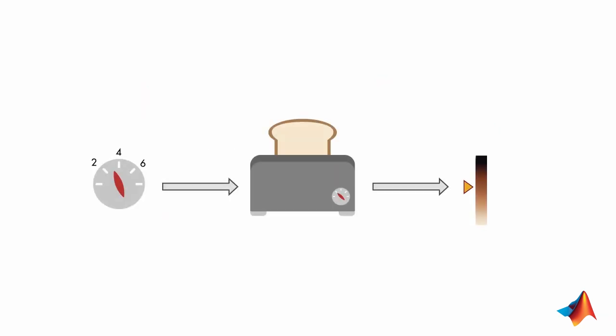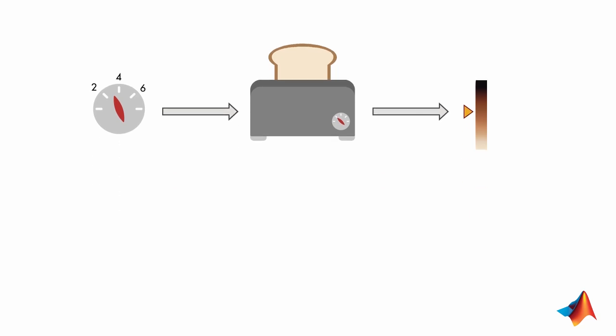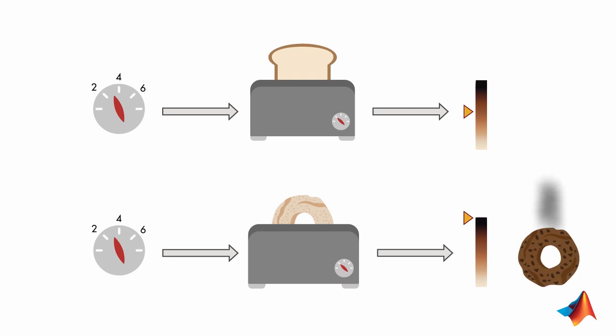We consider the toaster example. Through trial and error, you found that setting the timer to 3 gives you your desired bread color. But what happens when you use a different type of bread like a bagel? You may end up having a burnt bagel because the time settings you found by trial and error were for a slice of bread.